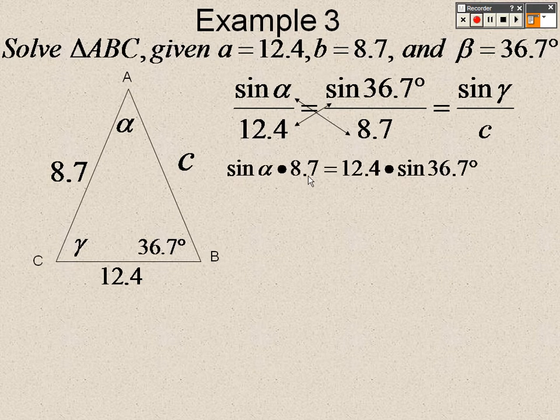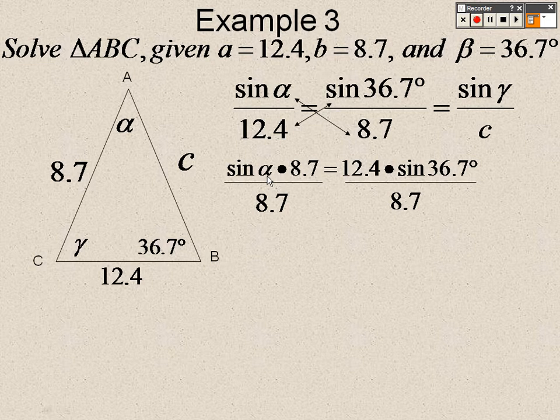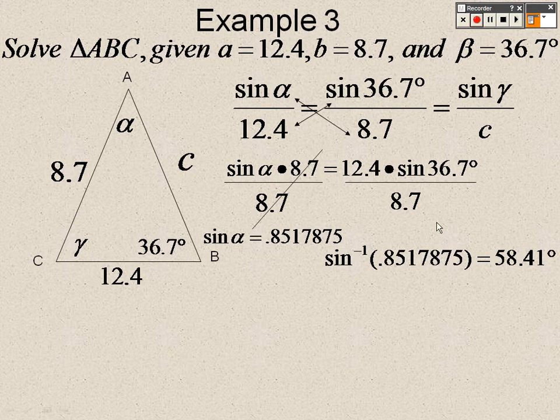So it's sine of alpha times 8.7 equals 12.4 times sine of 36.7. So to get sine of alpha by itself, I divide by 8.7 on both sides to get sine of alpha equals 0.8517875. Now that tells me because it's less than 1 that I know this, you can solve this. It's not more than 1, so I will get an answer. When we go to do this, I do the inverse sine because I'm trying to find alpha. I'm trying to find the angle. And I get that alpha is 58.41.